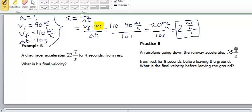So, I'm going to write down what we're being asked. V final equals question mark. I'm going to look through the problem to see what relevant information we're given. Accelerates 23 miles per hour per second. I also see 4 seconds, so I notice that that is the time interval. And, from rest, meaning the initial velocity equals 0.